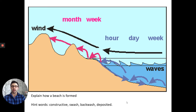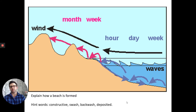Beaches are formed by constructive waves — the waves that build up the beach. They push using swash, but have a very small backwash. They push a huge amount of material onto the beach, and only a little of this material is taken away by the weaker backwash of a constructive wave, so sediment is deposited on the beach.